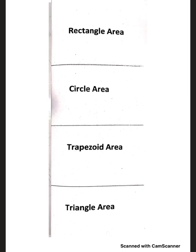When we're talking about area, we're talking about the amount of space that something covers. For rectangles, on the outer part I want you to write the formula: area equals base times height. Right underneath that, I also want you to write area equals length times width.